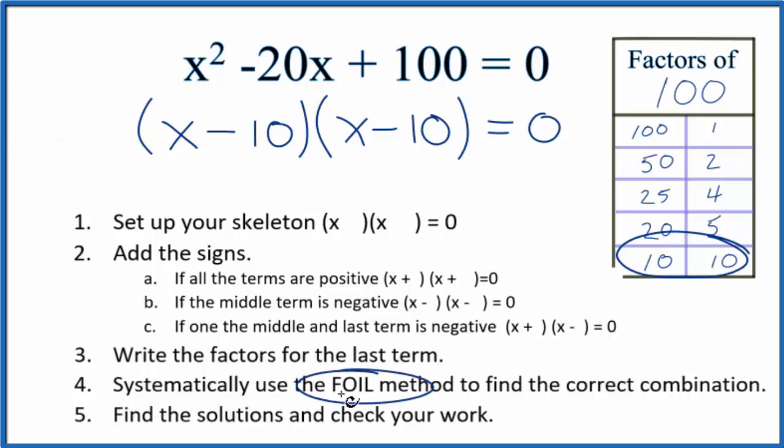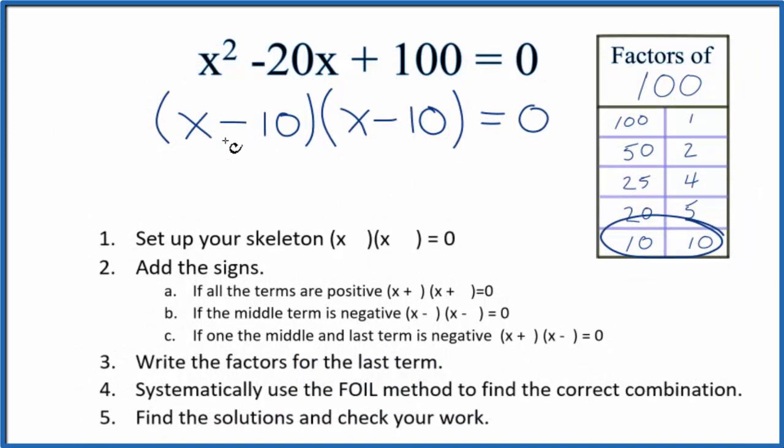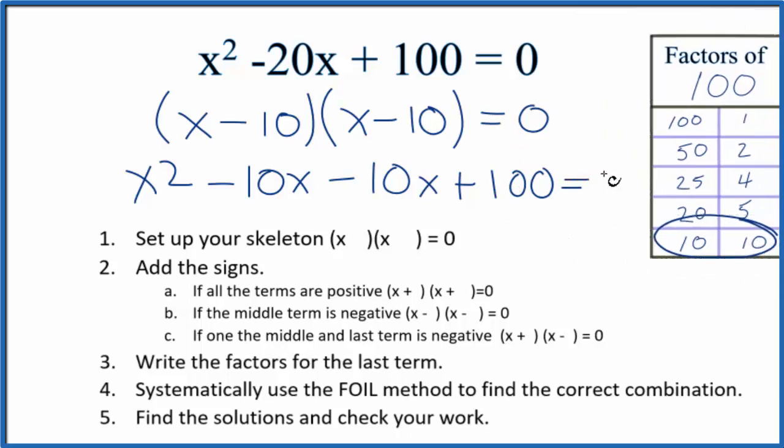To do that, we'll multiply the first terms: x times x gives us x squared. The outside terms: minus 10x. Inside: minus 10x. And then the last term we have minus 10 times minus 10, that'll give us a positive 100.